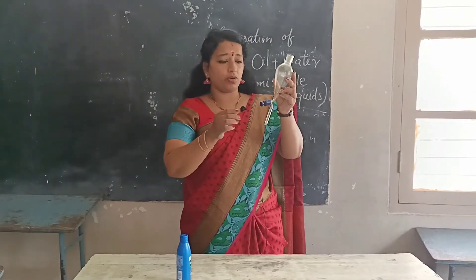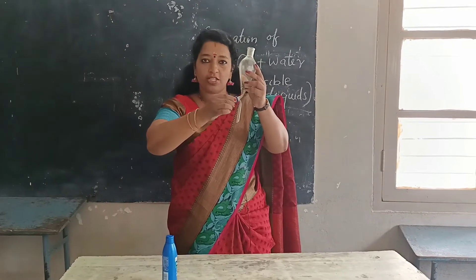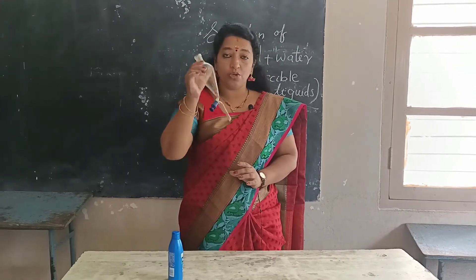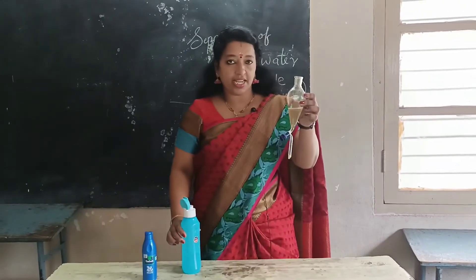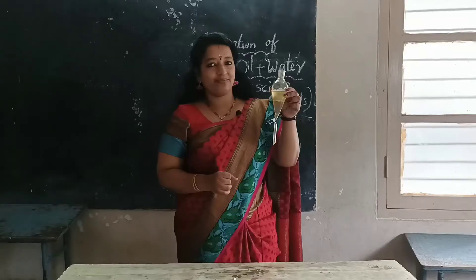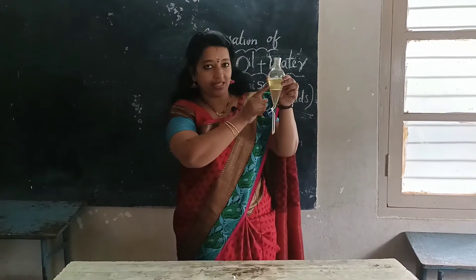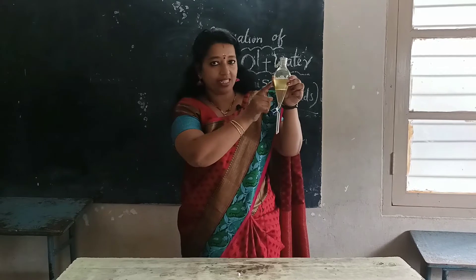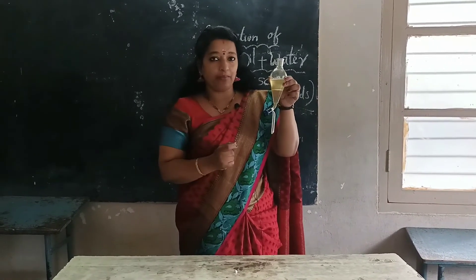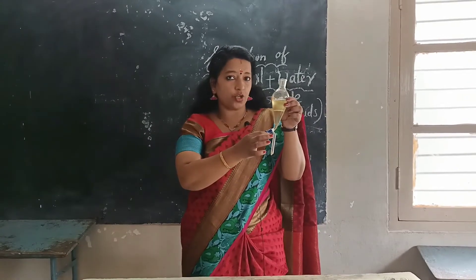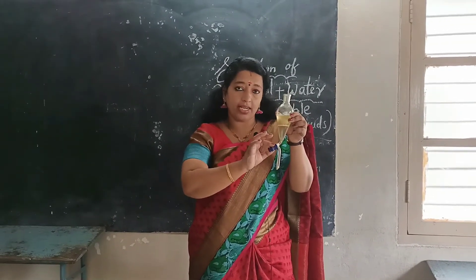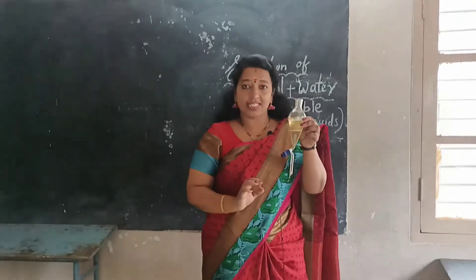Here there is a small part called a stopcock. We can open it or we can close it. I will show you how to separate oil and water now through the separating funnel. I have taken some amount of oil in the separating funnel and I am going to pour some water. When I pour the water, you can see two different layers — water and oil layers separately. Water is at the bottom and the above layer is oil. Using this stopcock we can separate oil and water.